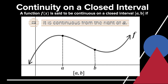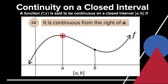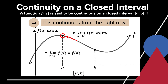For the second condition, it is continuous from the right of a, meaning: the value of f(a) exists; the limit of f(x) as x approaches a from the right exists; and the limit of f(x) as x approaches a from the right is equal to the value of f(a). These three subconditions must all be satisfied for the function to be continuous from the right of a.